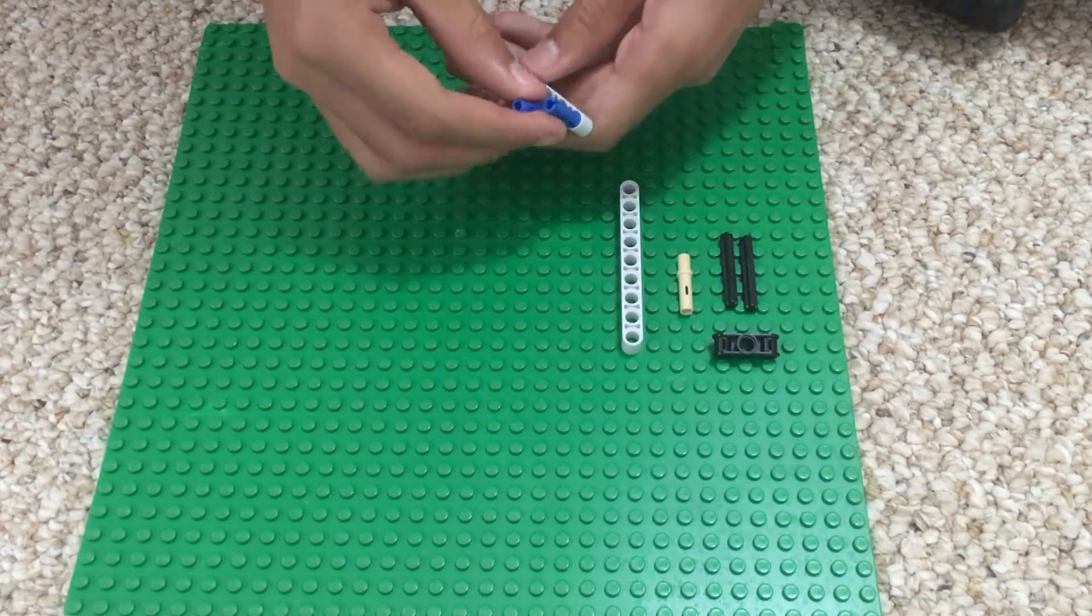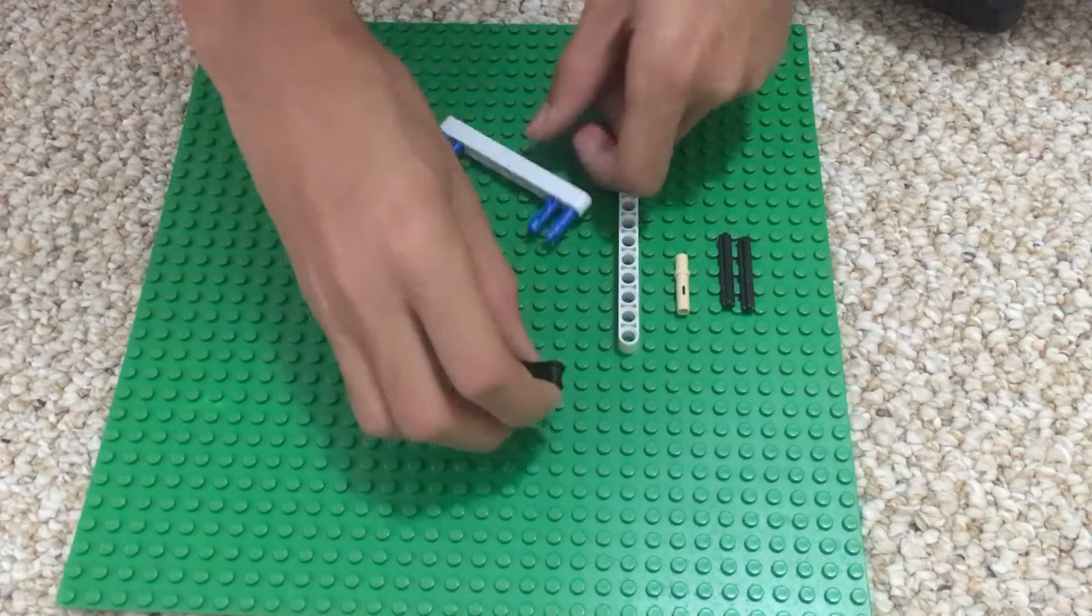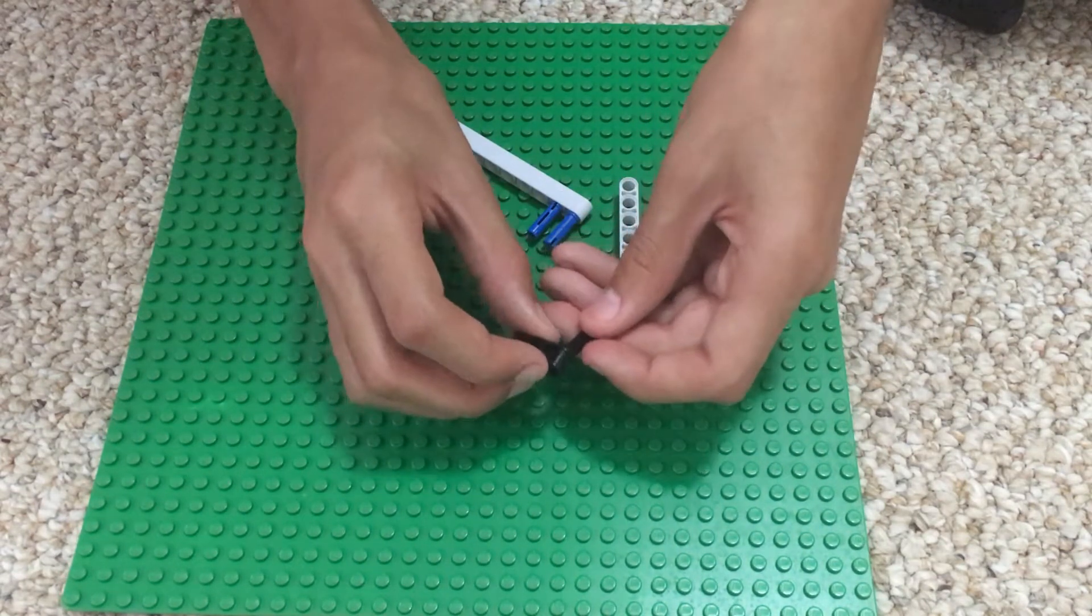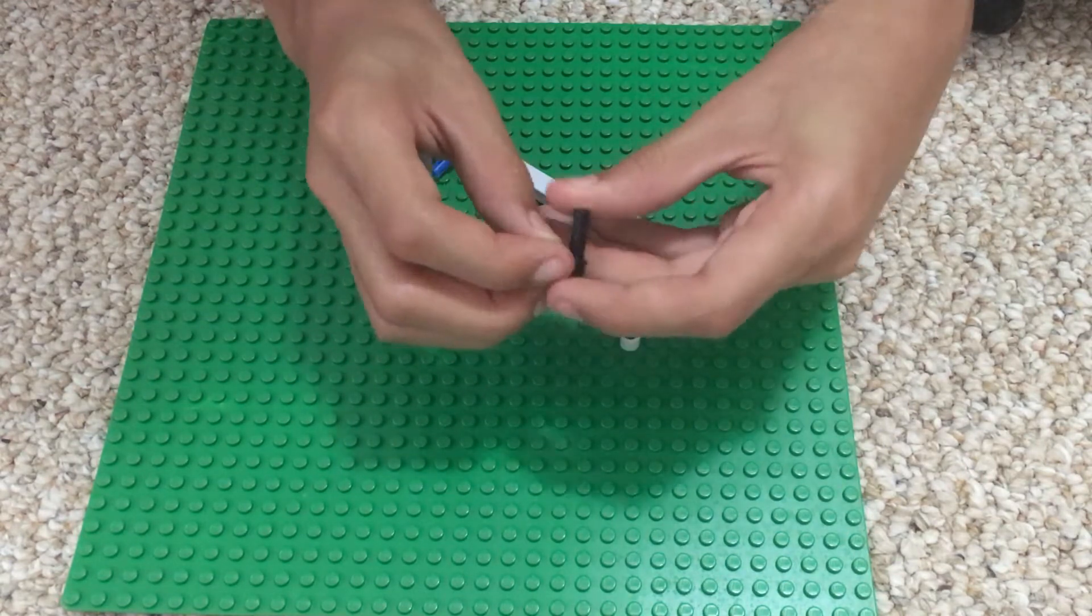Then you take this, put these on halfway - only halfway, well kind of in the middle, a little bit on both sides like this.